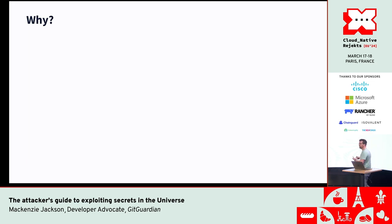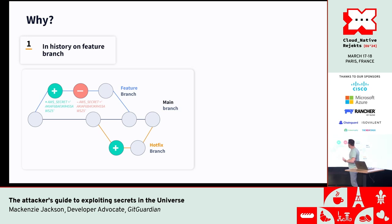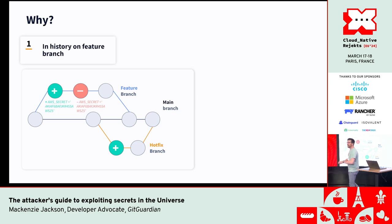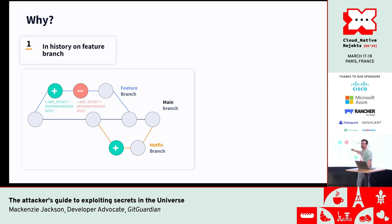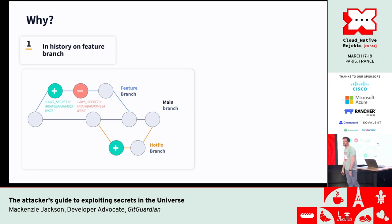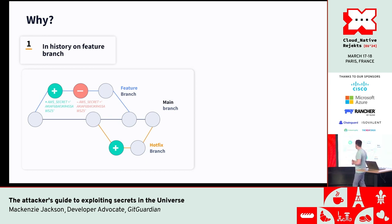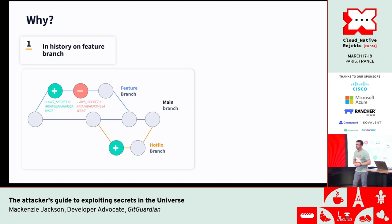Why are there so many secrets in source code? One obvious scenario: a developer needs to connect to an S3 bucket, gets a key, hard codes it just to check that it works, then removes it. A hundred commits later when it's ready to merge, you're looking at the latest version and don't see any credentials. It gets merged in and everyone forgets there was a secret hard coded even for just one commit — but it's in the history. Anyone who's tried to rewrite Git history in a large team knows the absolute torture that is. And if you squash your commits together, it's still in your garbage bin — still there.